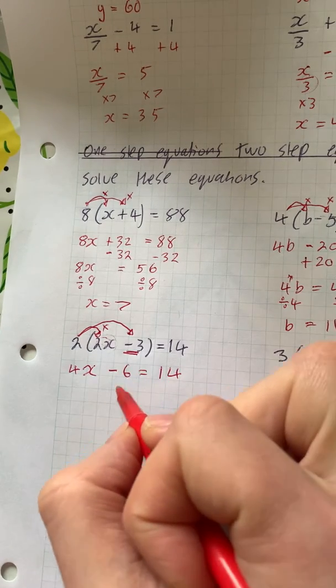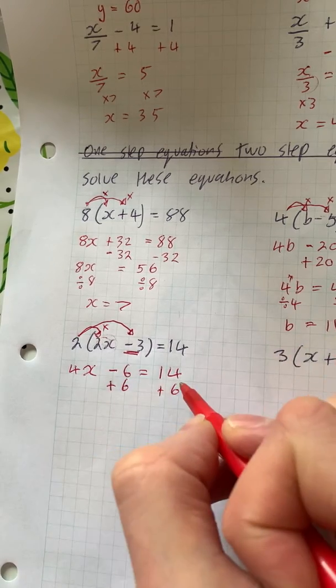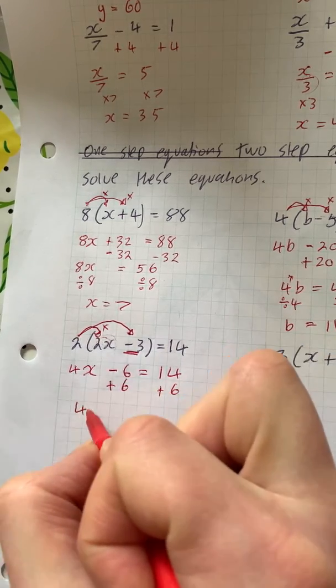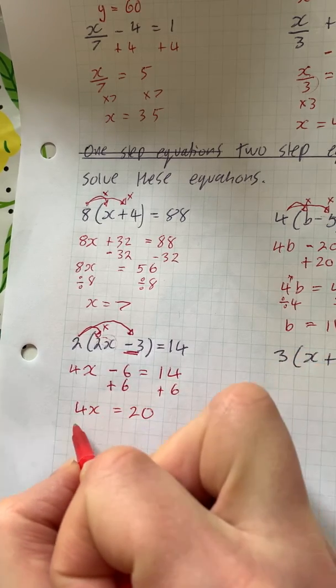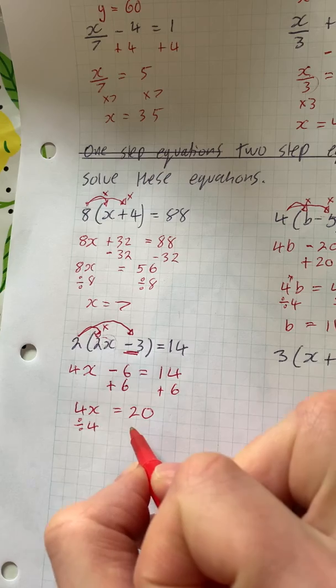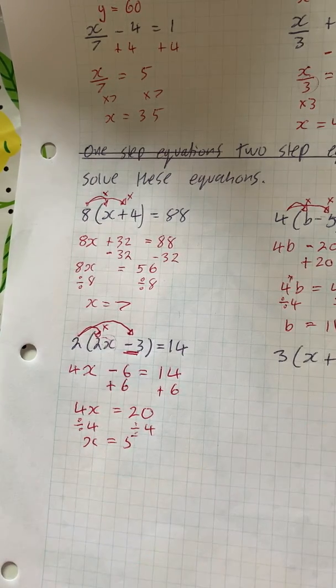Now the opposite of taking away 6 is adding 6. So we've got 4x is equal to 20. To get rid of that 4, we divide by 4, so x is equal to 5.